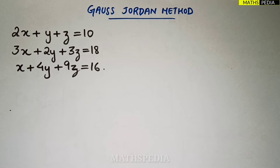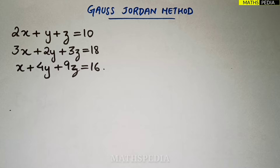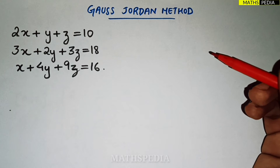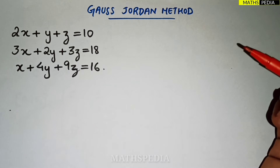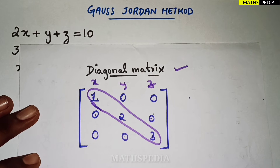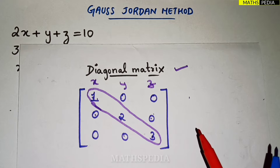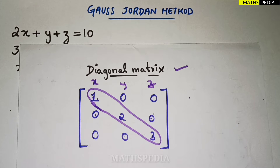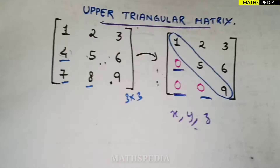In this video we'll solve one problem based on Gauss-Jordan method. In a previous video I discussed all things related to Gauss-Jordan as well as Gauss Elimination method. The main difference comes in terms of what they reduce the matrix into: in Gauss Elimination we reduce it into an upper triangular matrix, but in Gauss-Jordan we reduce it into a diagonal matrix.